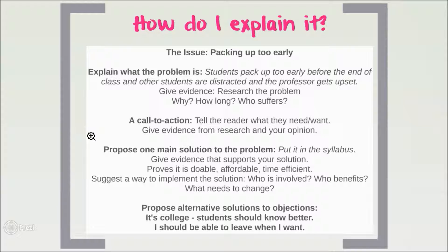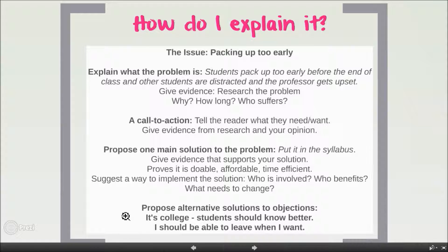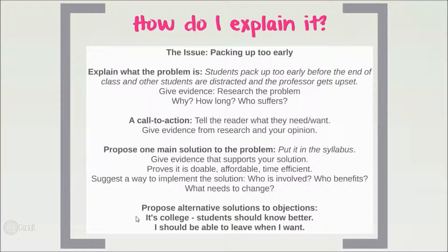Next, you're going to propose a main solution to the problem. For example, the solution might be to put a policy in the syllabus. You need to give reason and evidence to support it, make sure it can be implemented, and identify who is involved and who benefits. Then you plan for objections — that's where you propose alternative solutions. One objection might be: it's college, students should know better. So in your essay you'd address that by saying: although some people may argue students should know better, one solution is that if it is in the syllabus, students will know in advance, and if they don't follow it, they will be notified by written communication. That's how you think of other options for your solutions.